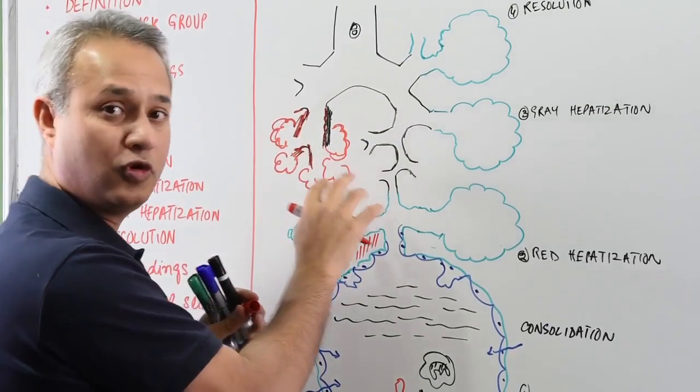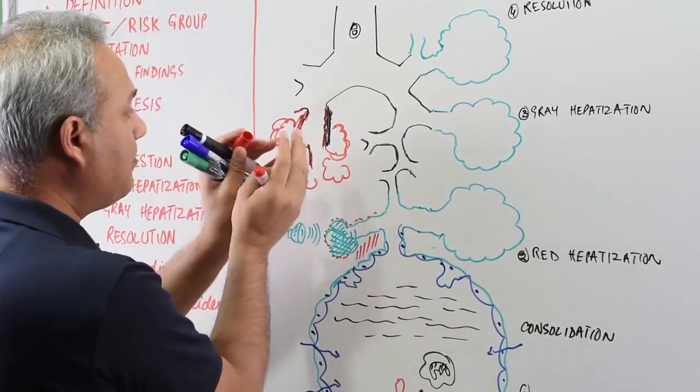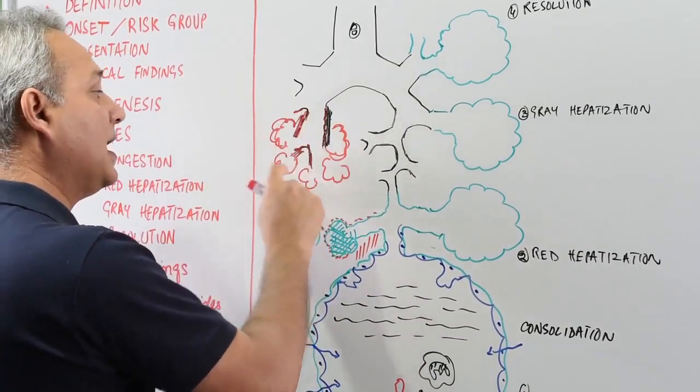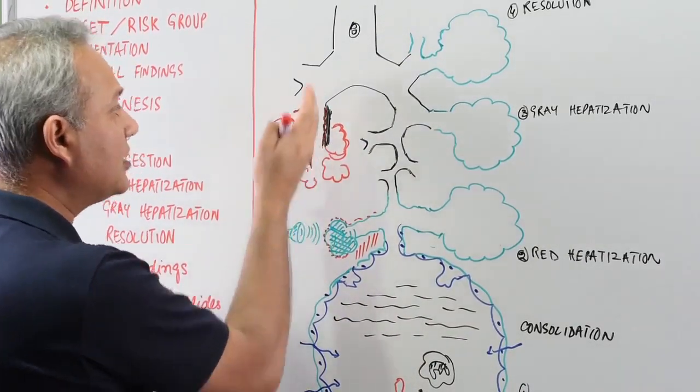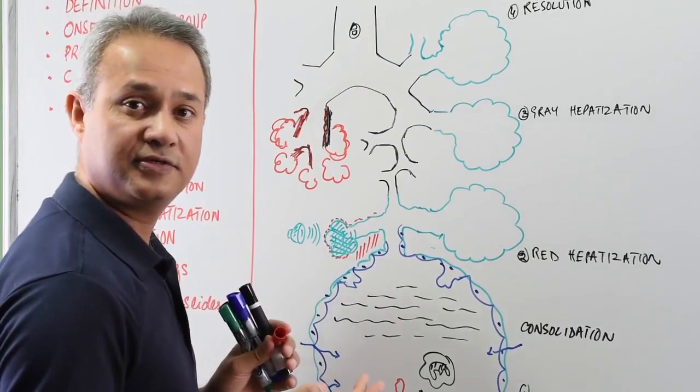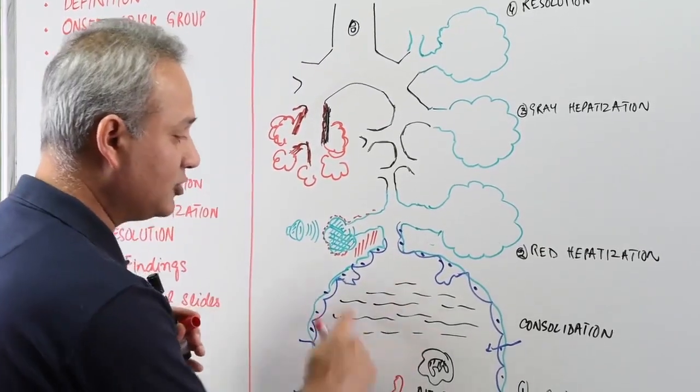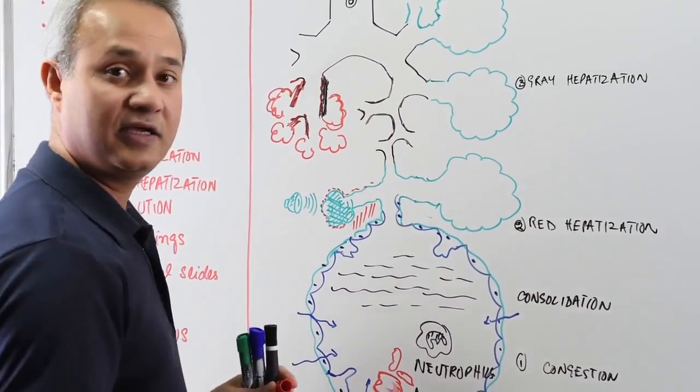And this can involve more than one lobe. Normally patchy areas of the lung parenchyma and the alveoli near the airway walls. That is the kind of distribution that you would see. Here you would see one complete lobe getting consolidated.